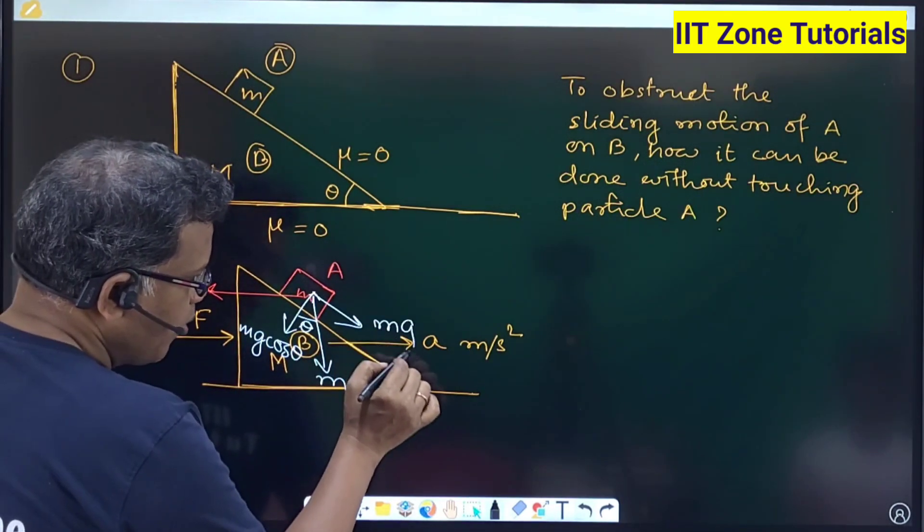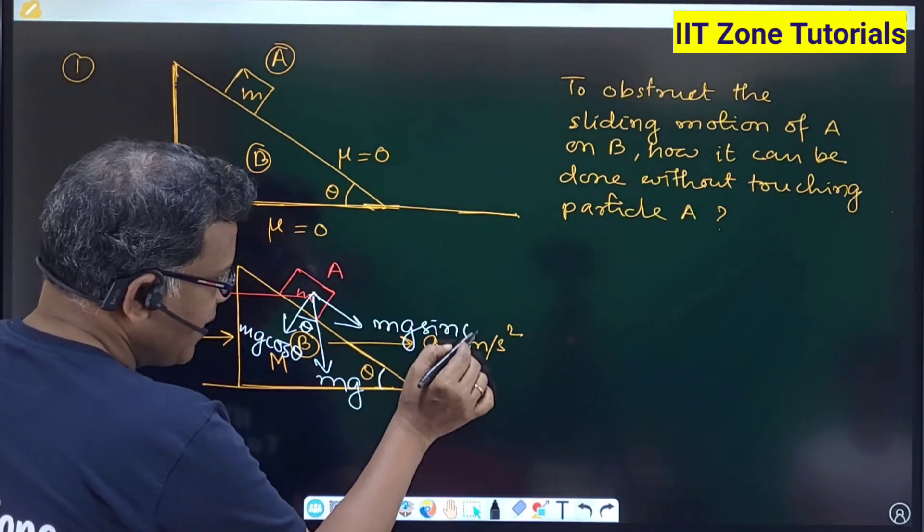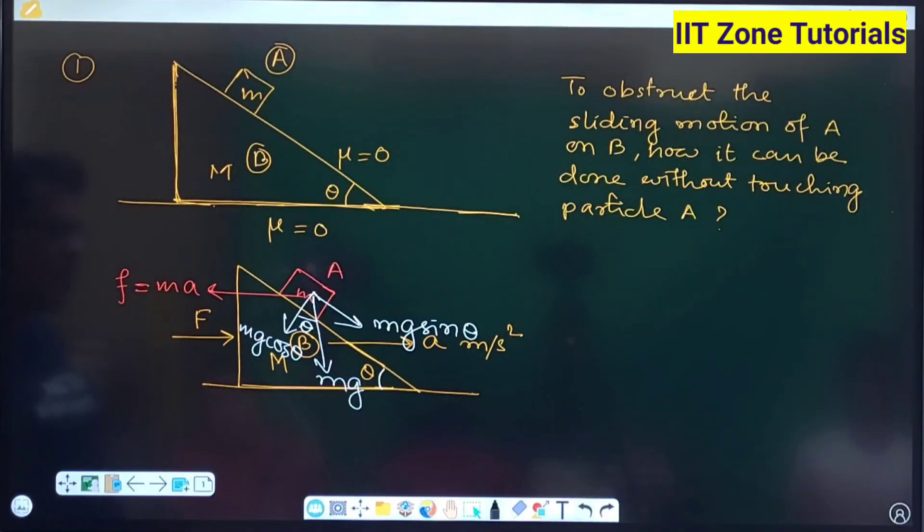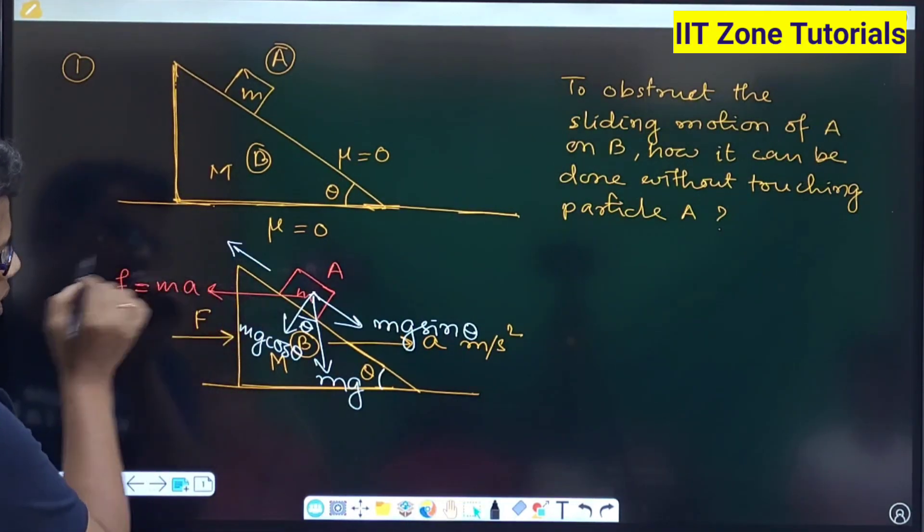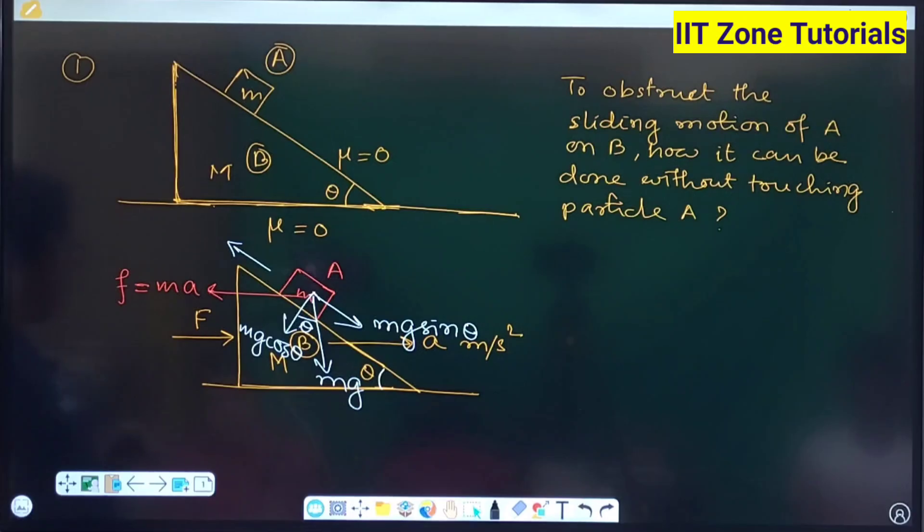So the component of weight down the incline plane will be Mg sin theta. So that means the mass can slide down the incline plane with the force of Mg sin theta. To stop the mass not to move down the incline plane you need to exert some balancing force in the direction upward then only you can oppose its downward motion, yes or no.